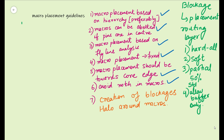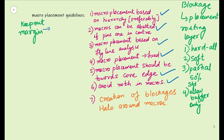Apart from that, we have a keep out margin. A question that is asked very frequently in interviews is: what is the difference between keep out margin and placement blockage? As a fresher, the answer should be that keep out margin is logical and is not based on the physical placement of the design. A blockage is not logical — it is physical — which means in blockages, you have to specify the coordinates. But in keep out margin, you don't have to specify the coordinates; you specify the logical outer margin.